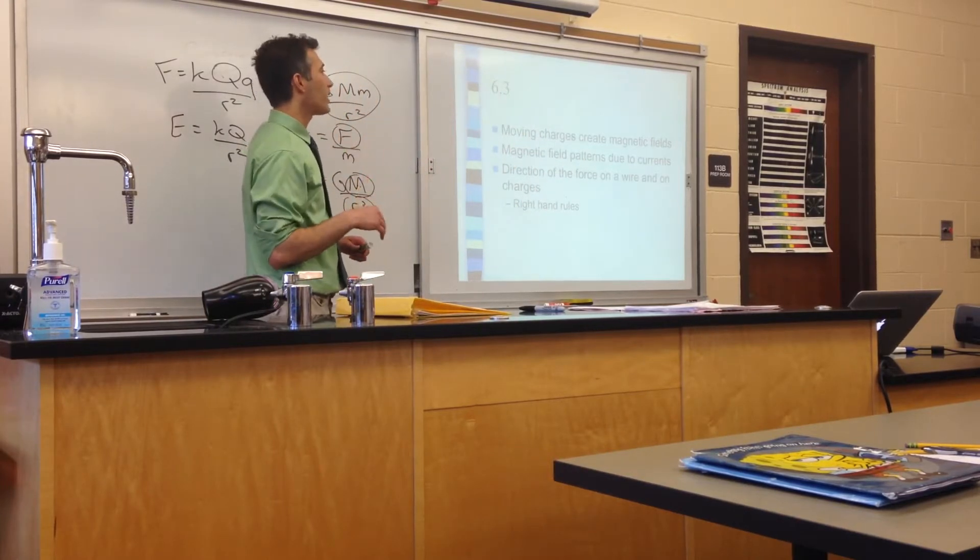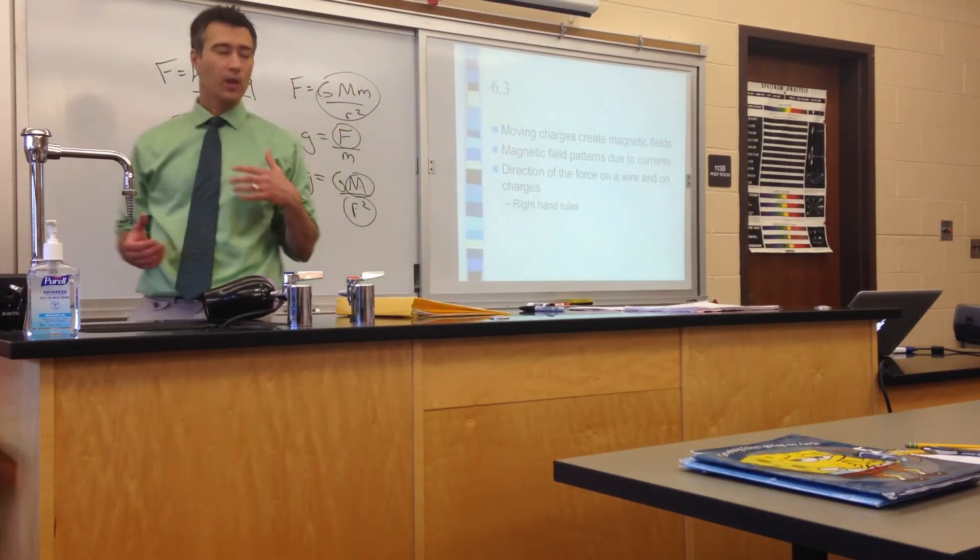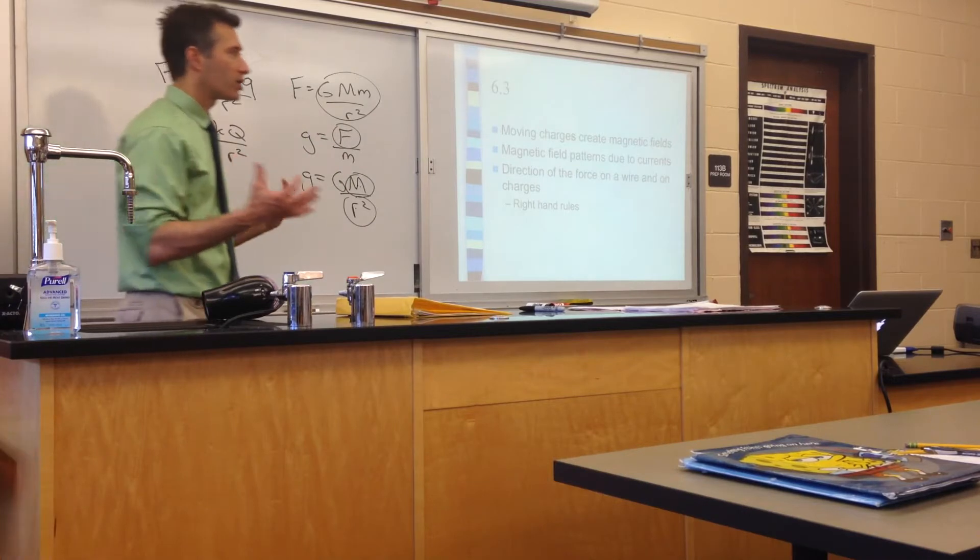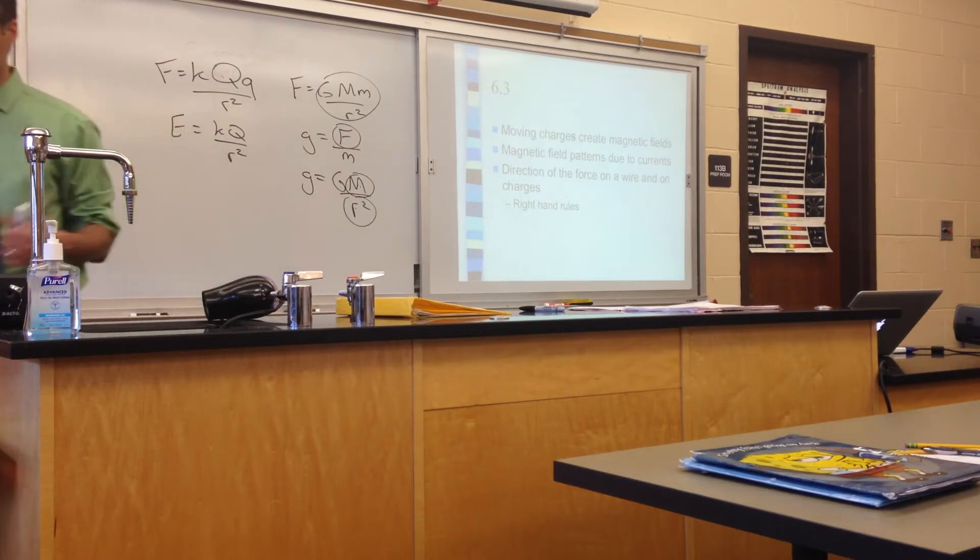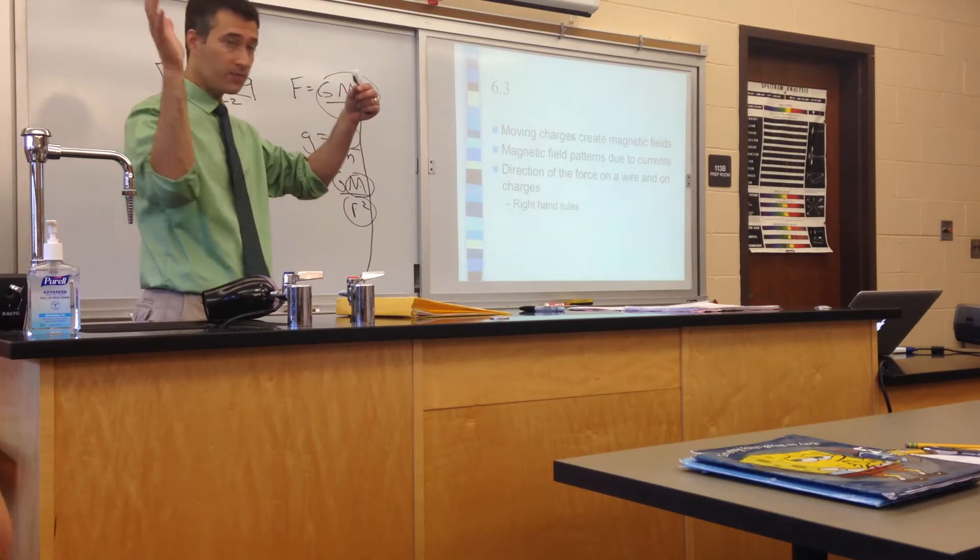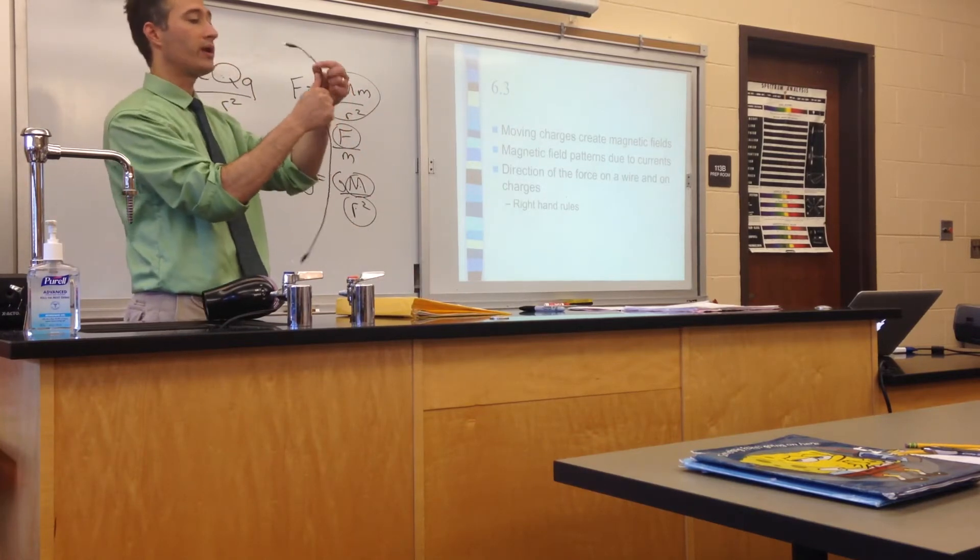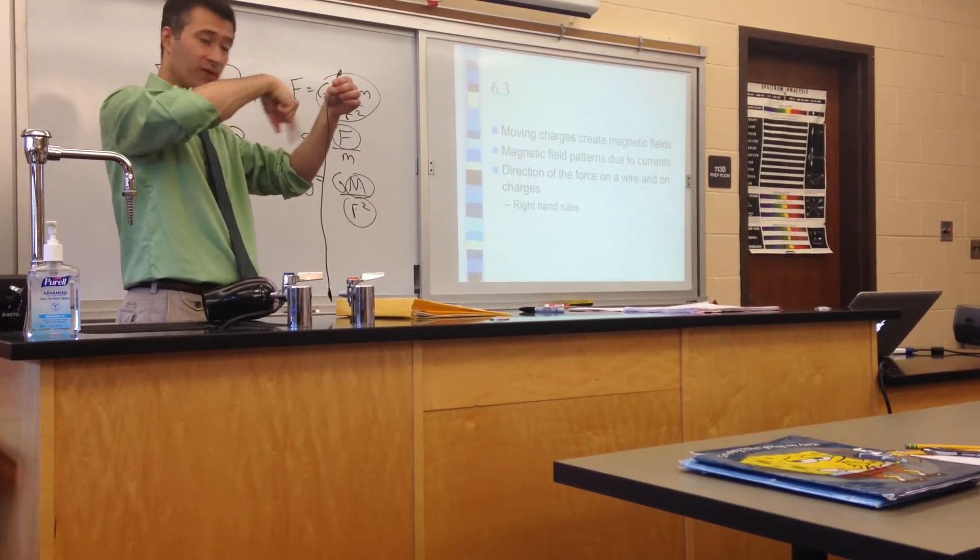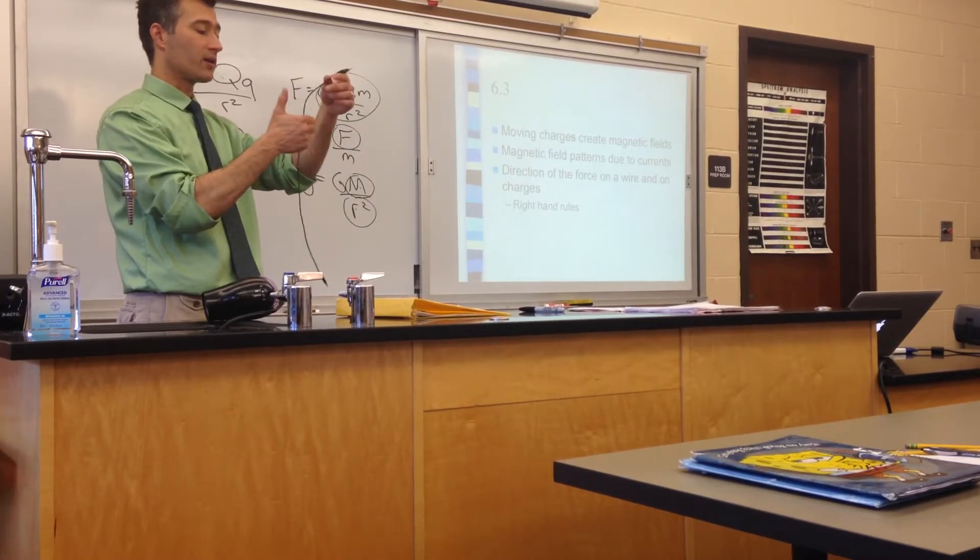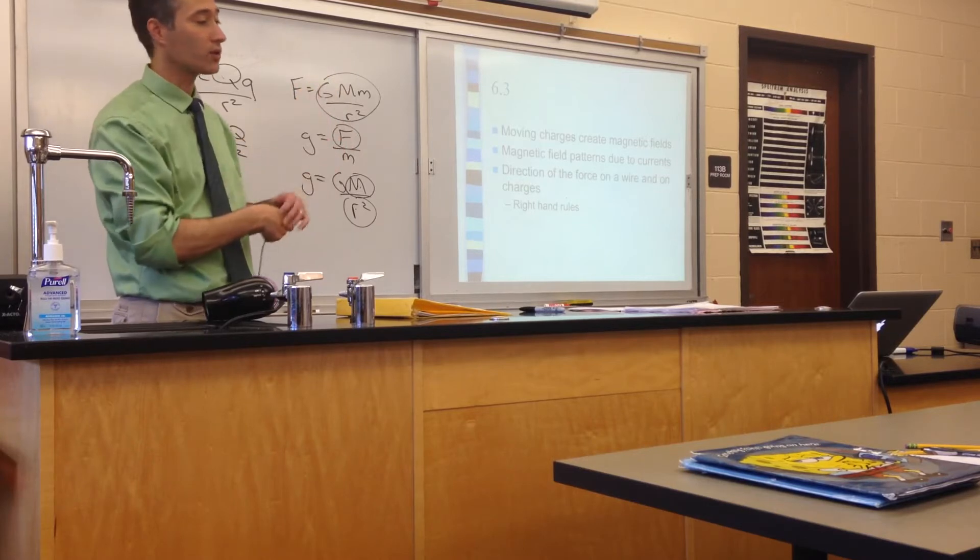We had a number of different right-hand rules. The first right-hand rule allowed us to determine the direction of the magnetic field around these current-carrying wires. The way that the first right-hand rule worked was we wrapped our right hand around the wire, but we had to do it so that our thumb pointed in the direction that the current was traveling.